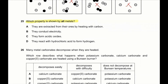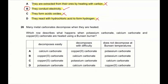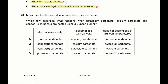Question 25: which property is shown by all metals? All metals are extracted from their ores by heating with carbon — no, that's wrong. They conduct electricity — yes, all metals conduct electricity, so B is correct. They form acidic oxides — wrong, metals form basic oxides. They react with hydrochloric acid to form hydrogen — not all metals react with HCl; some are very unreactive. So question 25, B is correct.